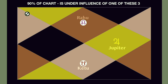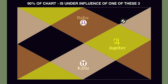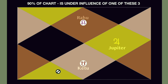Why do we say so? Because now if you see 90% of your chart, wherever Rahu, Ketu, and Jupiter are placed, just these three points have a dominant influence on the rest of the chart. Rahu has impact on these brown houses, Ketu has impact on these light brown houses, and Jupiter on these yellow houses in our example.